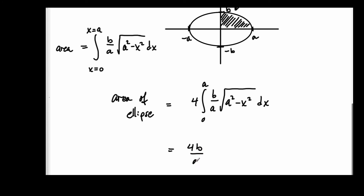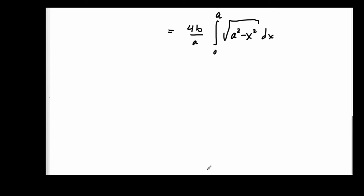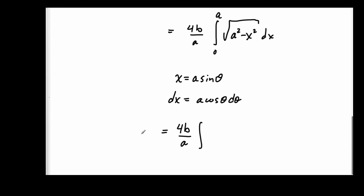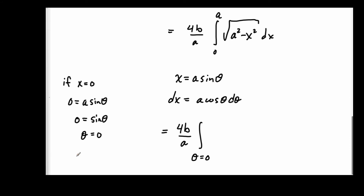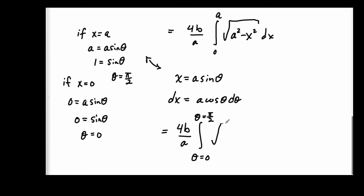We can factor out the constant b over a. Now I'm going to use trig substitution, substituting x equals a sine theta, which means dx is a cosine theta d theta. I'll change the bounds: when x is 0, theta is 0; when x is a, theta is pi over 2. So I'm actually integrating from 0 to pi over 2, substituting x equals a sine theta into the integral.